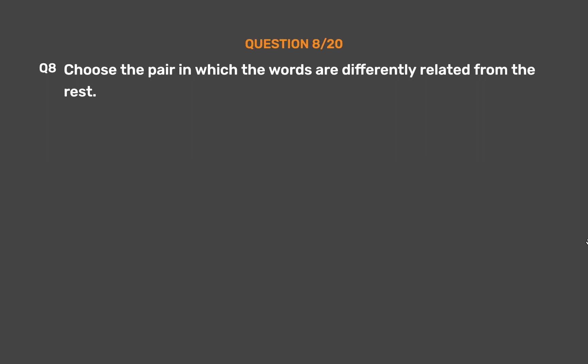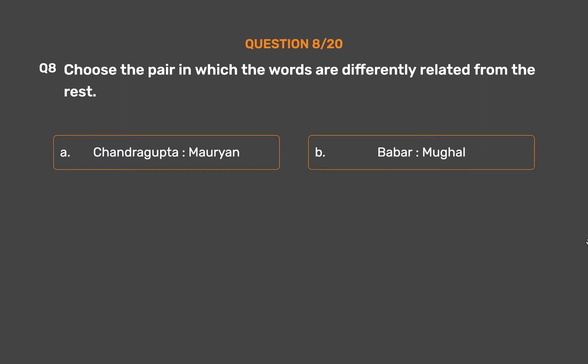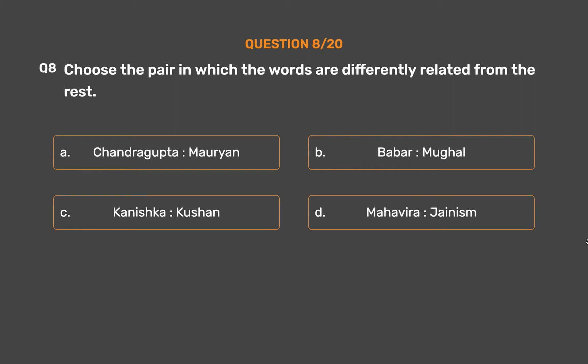Question number 8. Choose the pair in which the words are differently related from the rest. Option A: Chandragupta, Mauryan. Option B: Babar, Mughal. Option C: Kanishka, Kushan. Option D: Mahavira, Jainism.